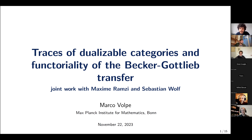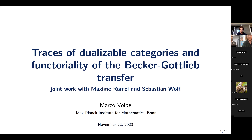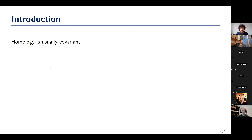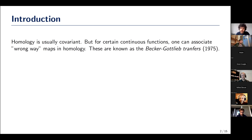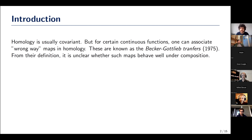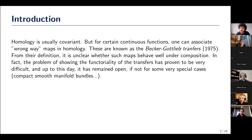Thanks for the introduction and the invitation. This is a joint work with Maxime Ramzi and Sebastian Wolf. What probably everybody knows is that homology is usually covariant, but there are some special functions between topological spaces for which you can associate wrong-way maps in homology. These are known as the Becker-Gottlieb transfers, since they were introduced by Becker and Gottlieb in 1975.